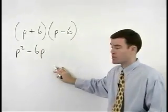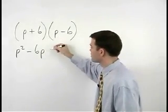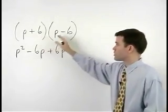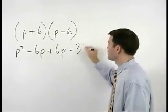Plus the product of the inner terms, positive 6 times P, which is positive 6P, plus the product of the last terms, positive 6 times negative 6, which is negative 36.